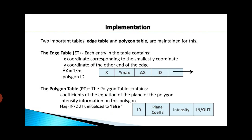Now, how we can implement this scan line method — here we have to maintain three data structures. You can see on this slide the first one is the Edge Table (ET). This table contains information about all the edges of the polygons. You can see from the row entry format what information is being stored in the Edge Table.